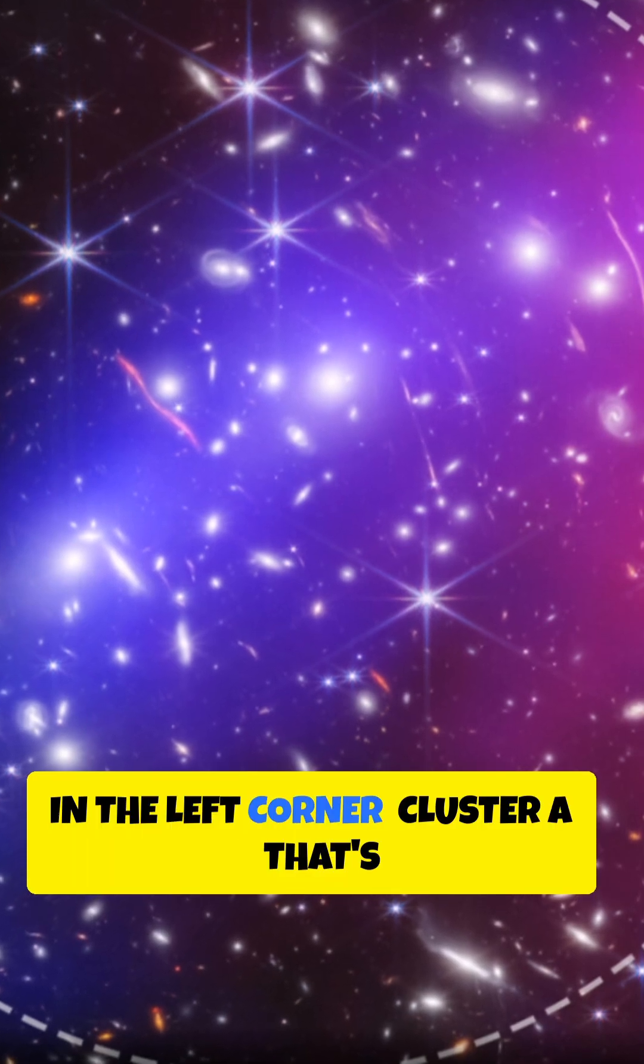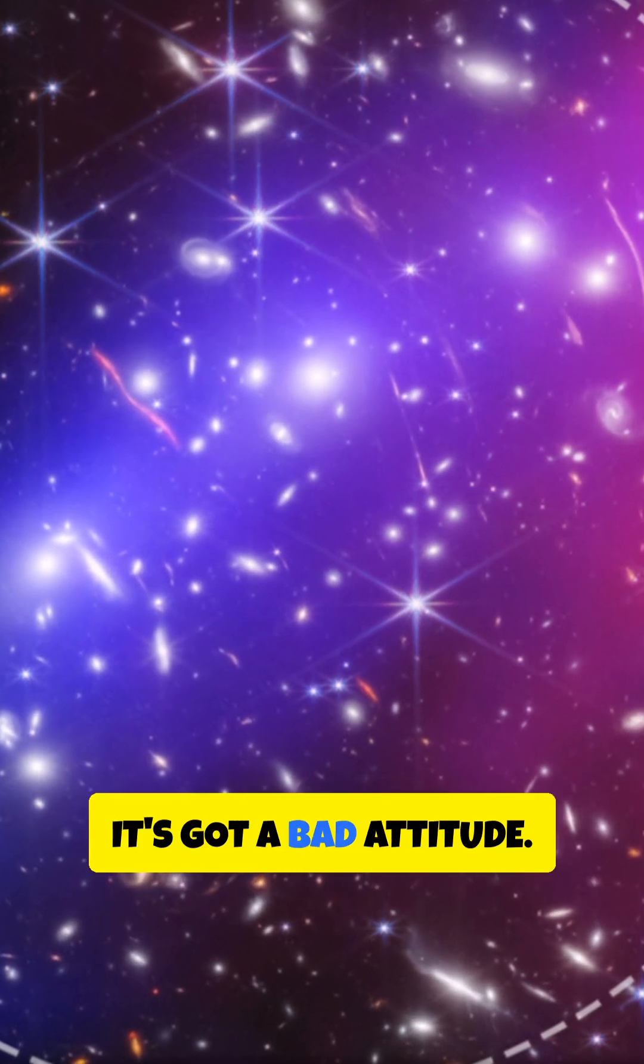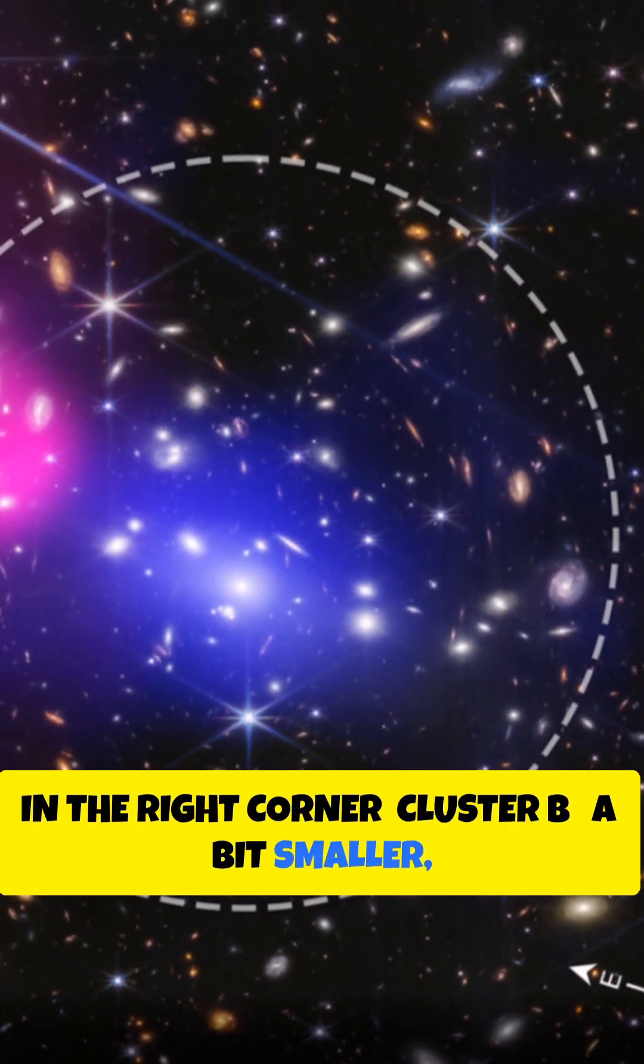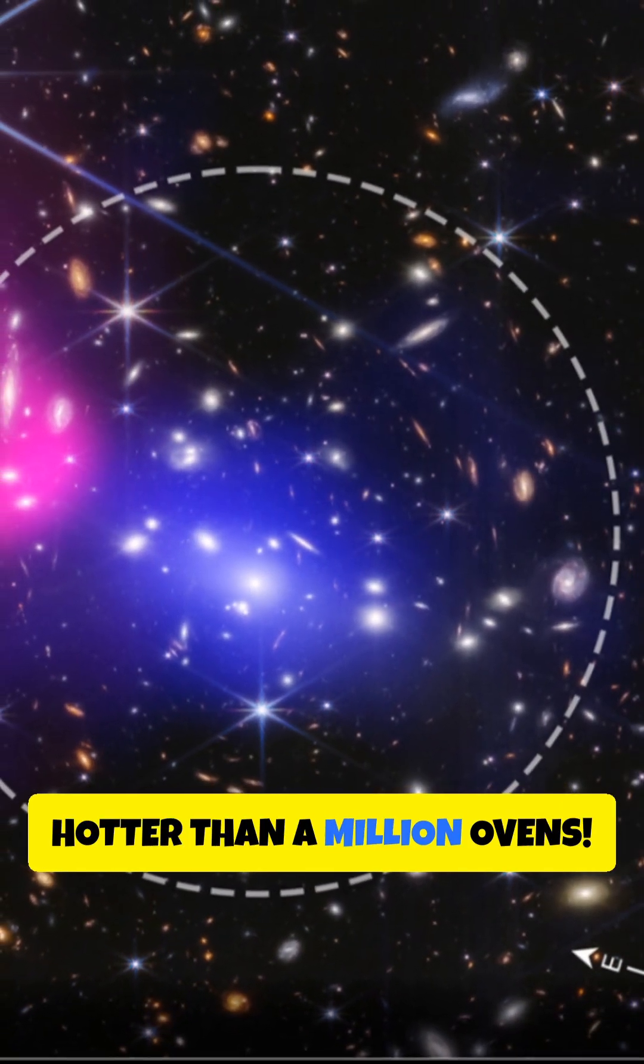In the left corner, Cluster A—that's one quadrillion suns, and trust me, it's got a bad attitude. In the right corner, Cluster B, a bit smaller, but it's packing hot gas, hotter than a million ovens.